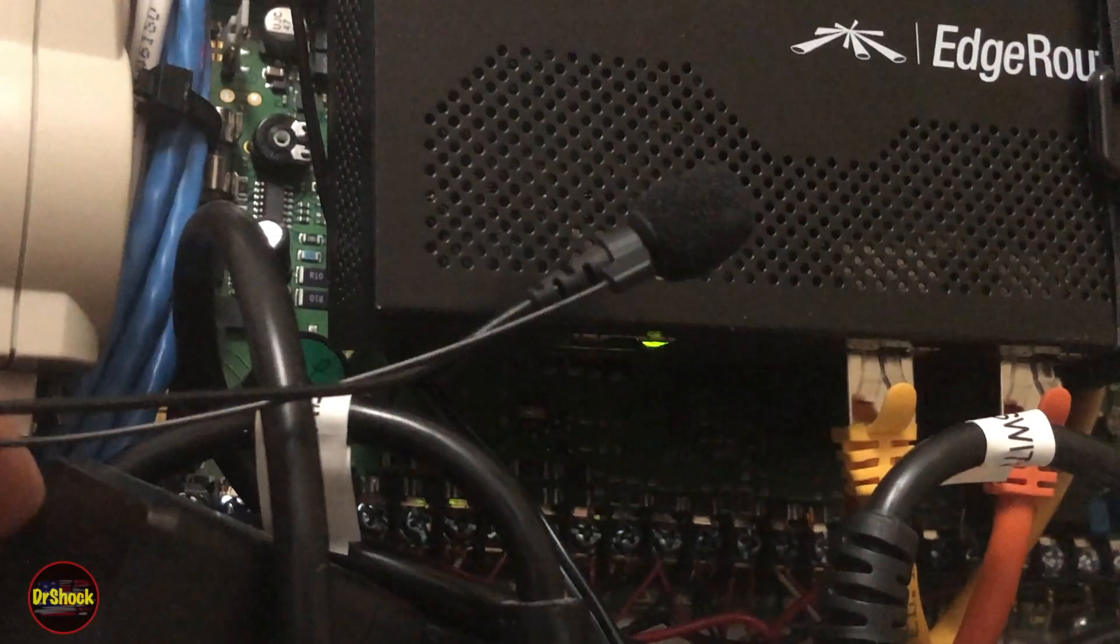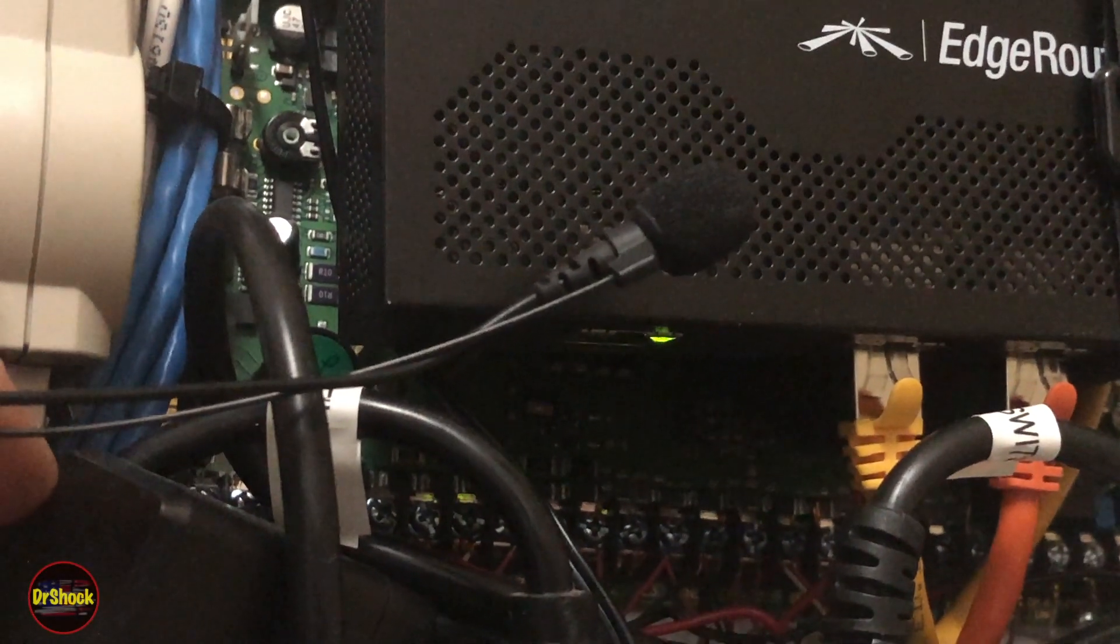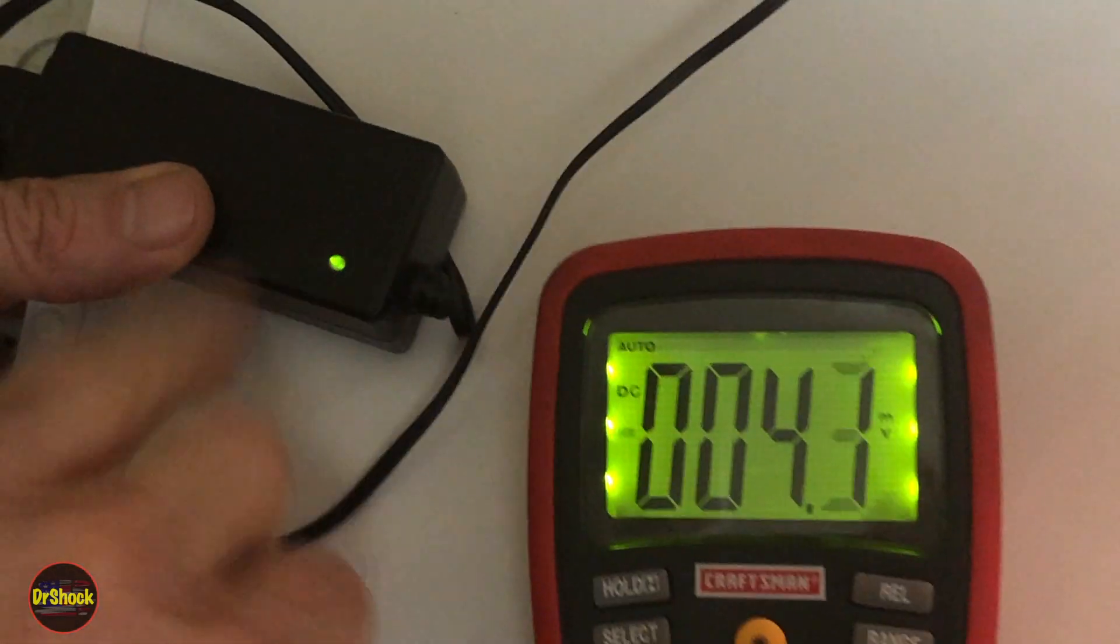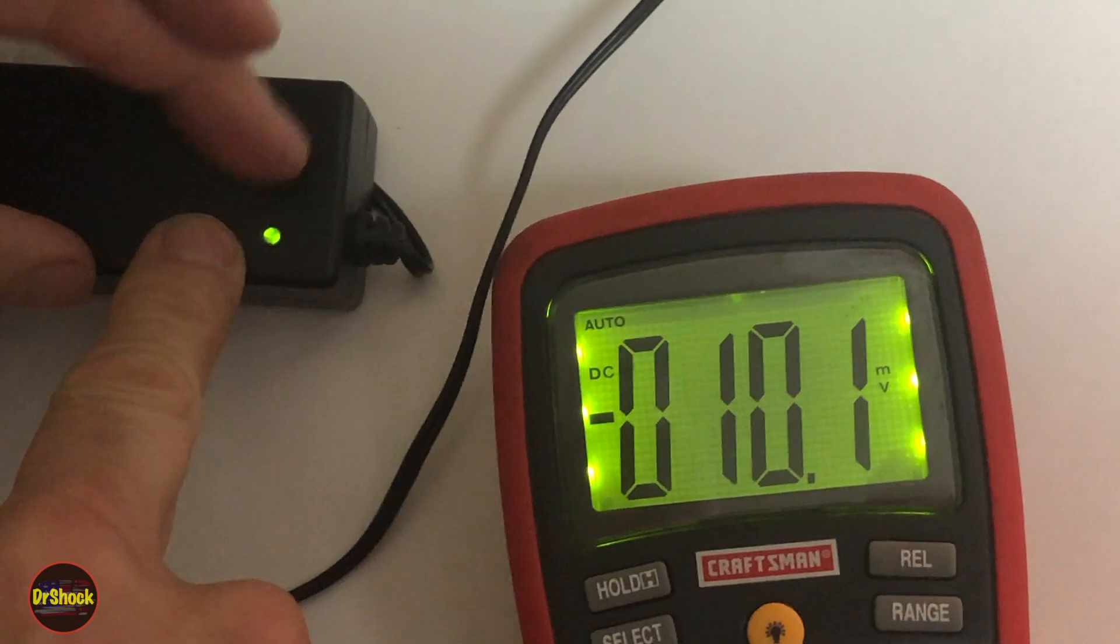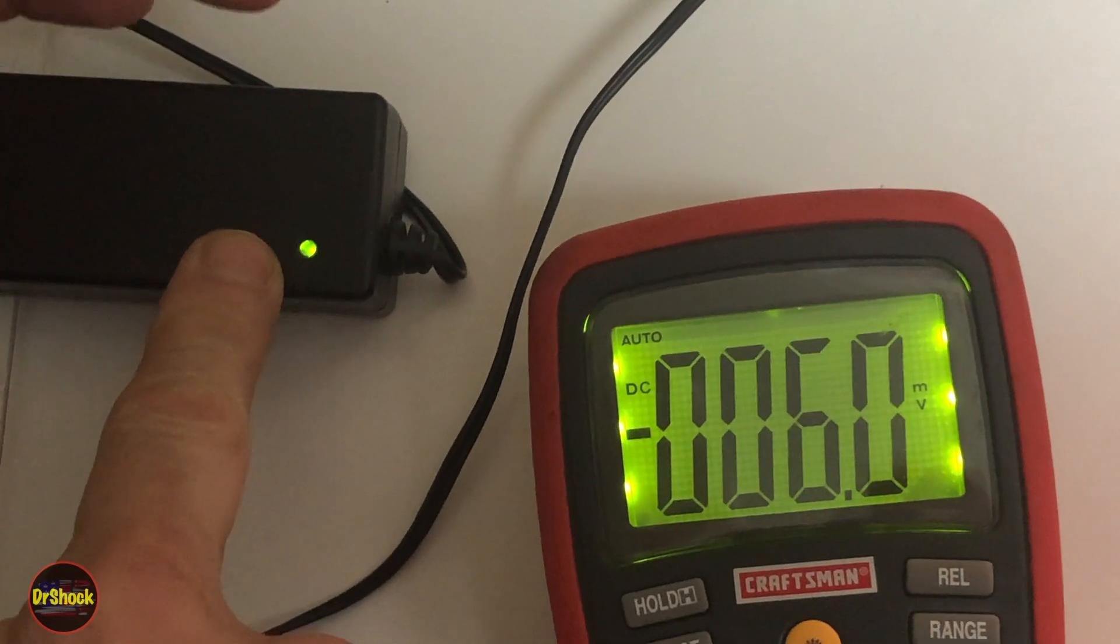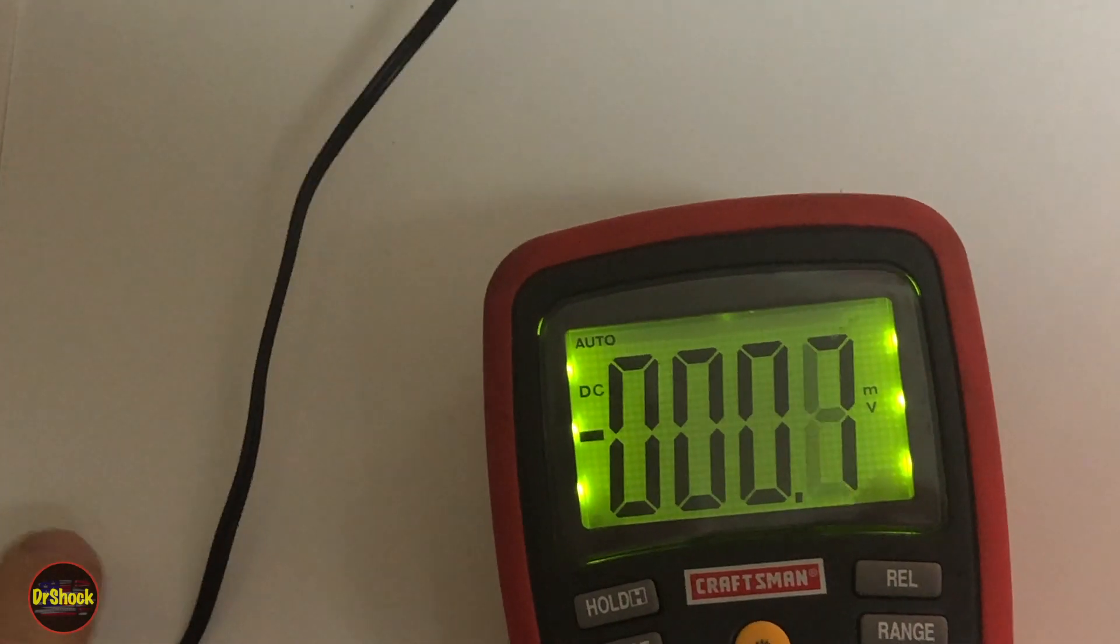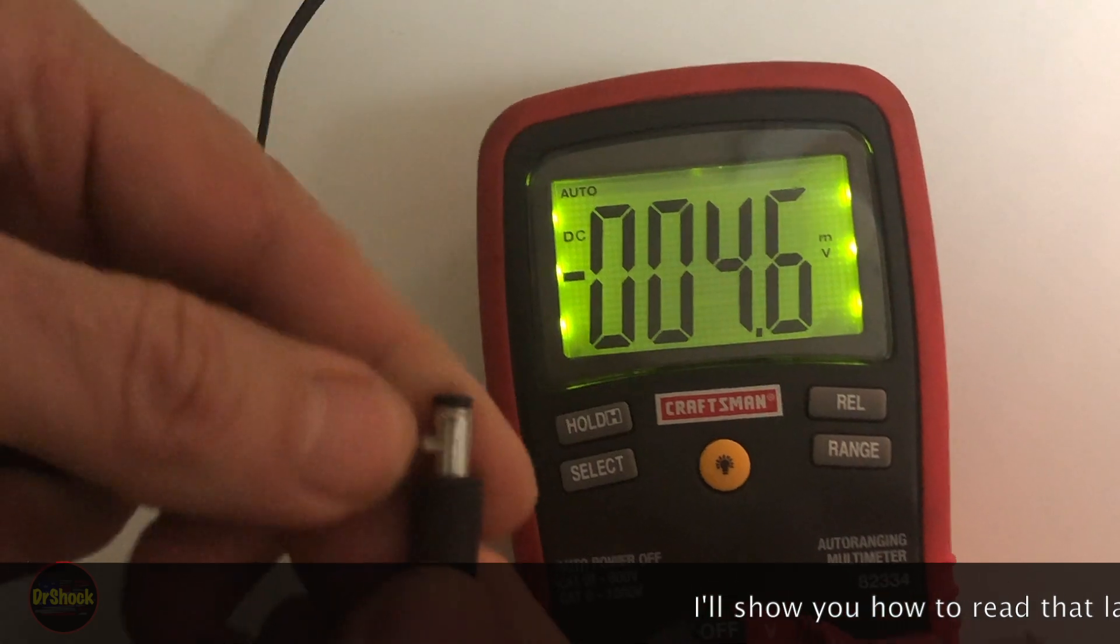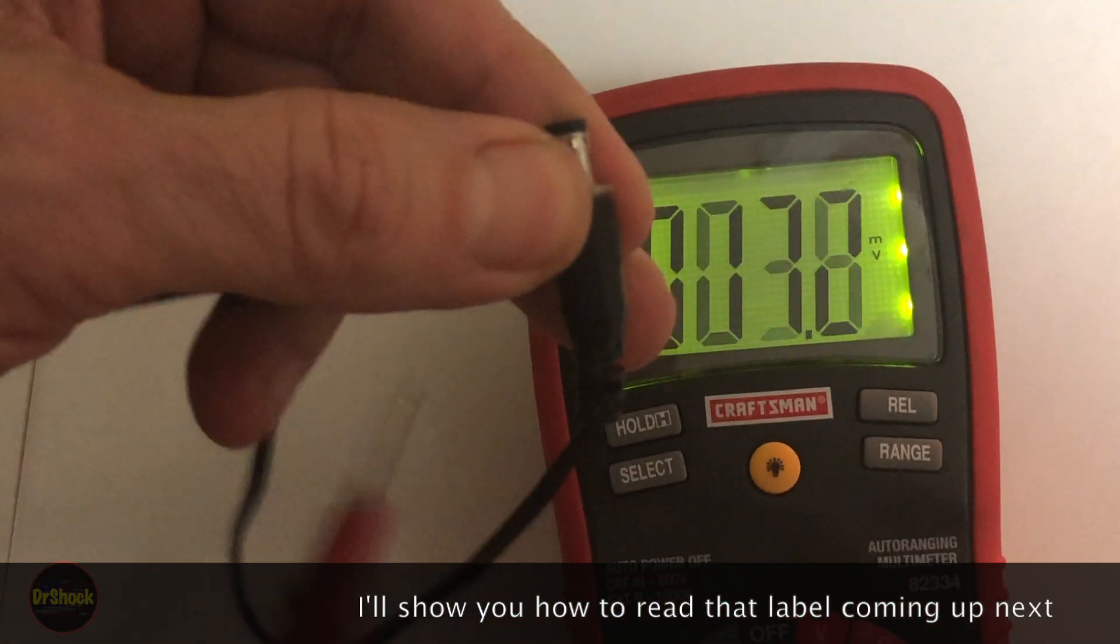Alright guys, so if we have this plugged in it's got a steady green power light, it looks like it's fine, right? If we kind of wedge it back here behind our little table here just for a second and then we take the output barrel's ground like we saw from the label, center pin's positive.